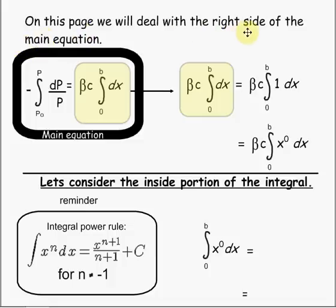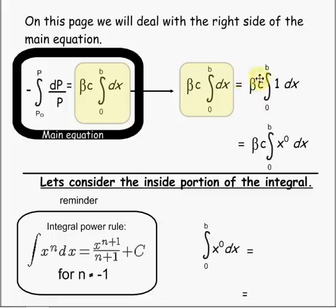On this page we will deal with the right side of the main equation. We have our constant of proportionality and our concentration integrated over zero to b dx. If we are going to integrate this, we can see that we leave our constants on the outside of the integrand, and we're going to be integrating from zero to b. There is a one in front of this dx, which is x to the zero power.